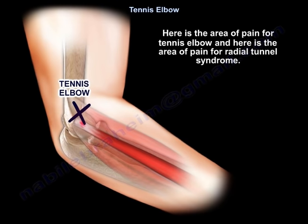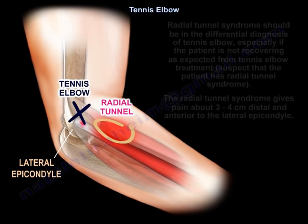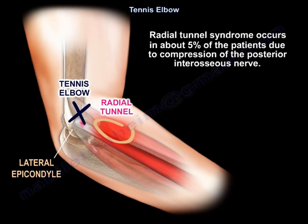Radial tunnel syndrome should be in the differential diagnosis of tennis elbow, especially if the patient is not recovering as expected from tennis elbow treatment. Radial tunnel syndrome gives pain about 3-4 cm distal and anterior to the lateral epicondyle, and occurs in about 5% of patients due to compression of the posterior interosseous nerve.